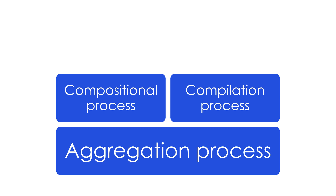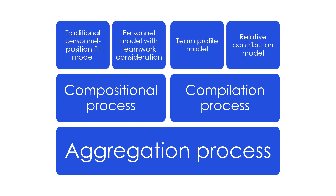The second type of aggregation is a compilation process. The collective-level construct is something different from a mere descriptive statistic of individual-level contributions. For example, team performance may be unduly influenced by the least or most competent individual member, members who occupy certain positions in the team, or individuals who emerge and take on particular roles such as leader or boundary spanner.